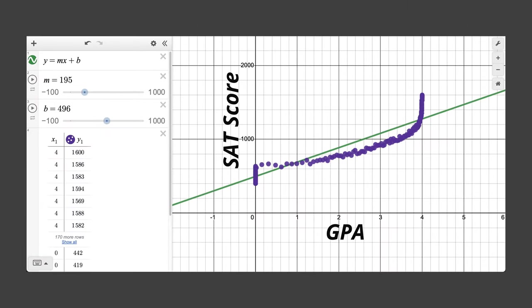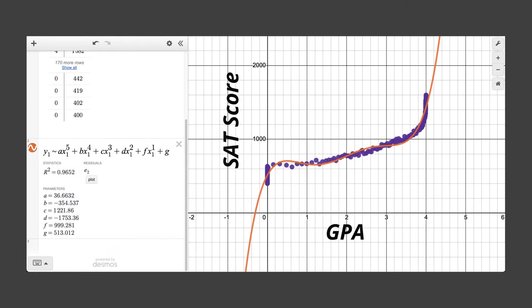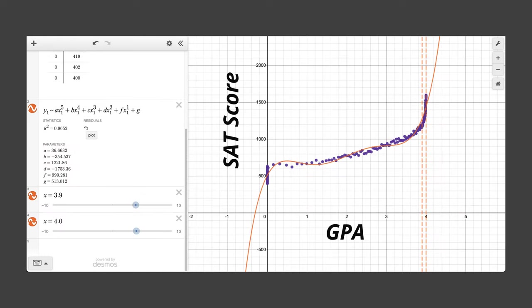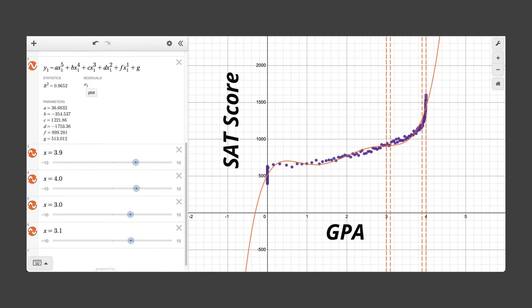Now let's step it up a level and play around with this fifth degree polynomial. Again, we manipulate the constants to match the function to the data. We see that this allows us to model a more nuanced relationship. Now our model correctly predicts that changing GPA from 3.9 to 4.0 likely corresponds to a larger SAT score difference than from 3.0 to 3.1.